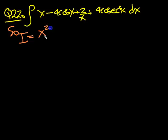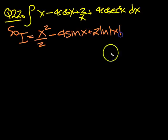the x integrates to x squared over 2, doesn't it? Minus integral of cos x is sin, so it's minus 4 sin x. 2 lots of 1 over x is 2 ln modulus of x.